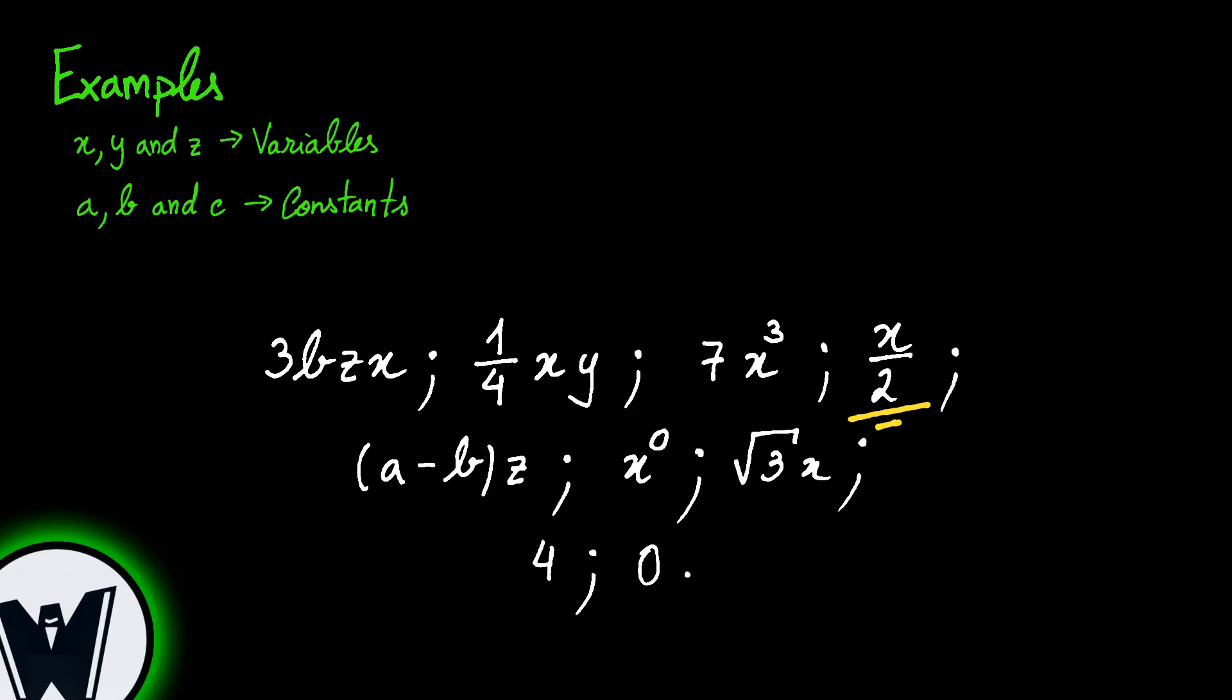X divided by 2 is also a monomial because it is the same as having 1 divided by 2 multiplied by x. A minus b between parentheses multiplied by z is a monomial because a and b are constants. Their subtraction will result in a constant which is then multiplied by the variable z.